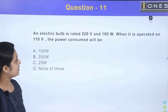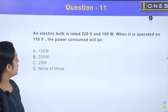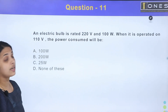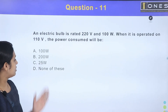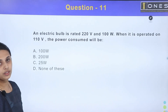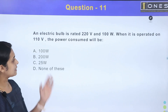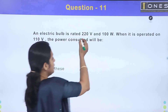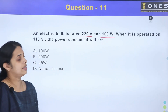An electric bulb is rated 220V and 100W. When it is operated on 110V, the power consumed will be. Options are 100W, 200W, 25W, and none of these. The voltage is 220V and the power is 100W.